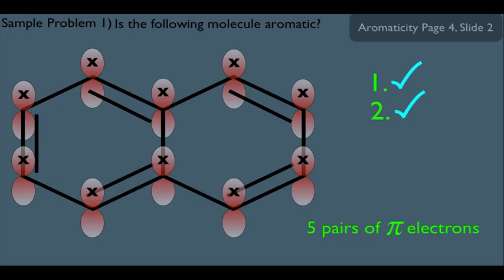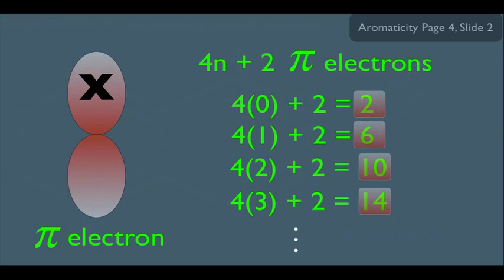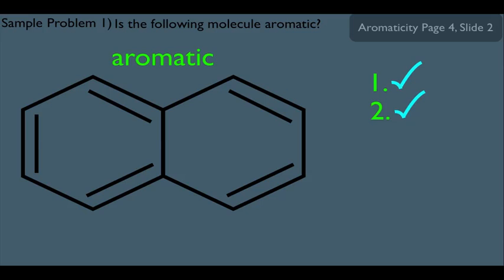Remember we also have that alternative second criterion. If you were to count all your pi electrons, you would get a total of 10 pi electrons. The 4n+2 formula does land on 10. So this molecule meets the second alternative criterion having 10 pi electrons, so it is definitely aromatic. You can decide which method to use for criterion 2. For the rest of these examples I'll use the regular one, but feel free to check if the alternative one works.